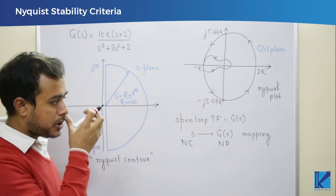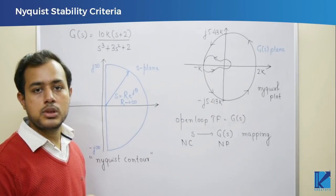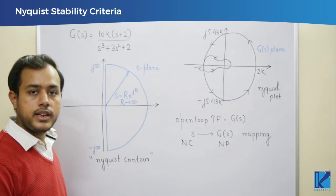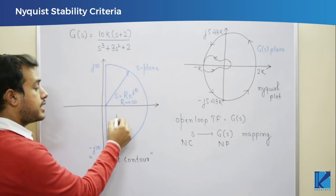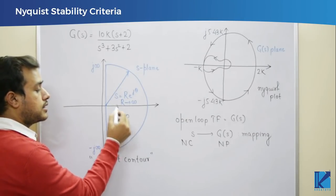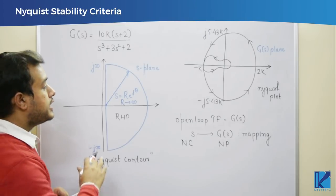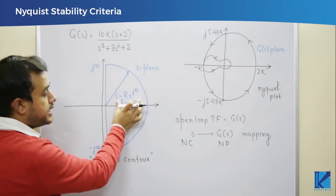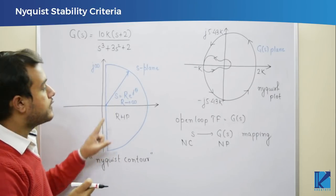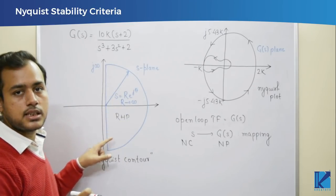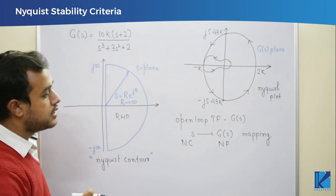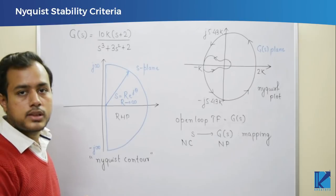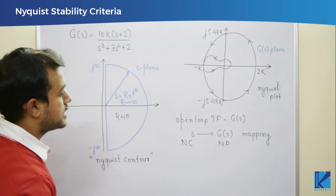When we want to derive stability, we have to see the poles in the right half plane. That is why the Nyquist contour is always chosen as the entire right half plane. We take the right half plane in the form of a semi-circle whose radius is infinite, so we can cover the entire right half plane and see the number of poles and zeros lying there.